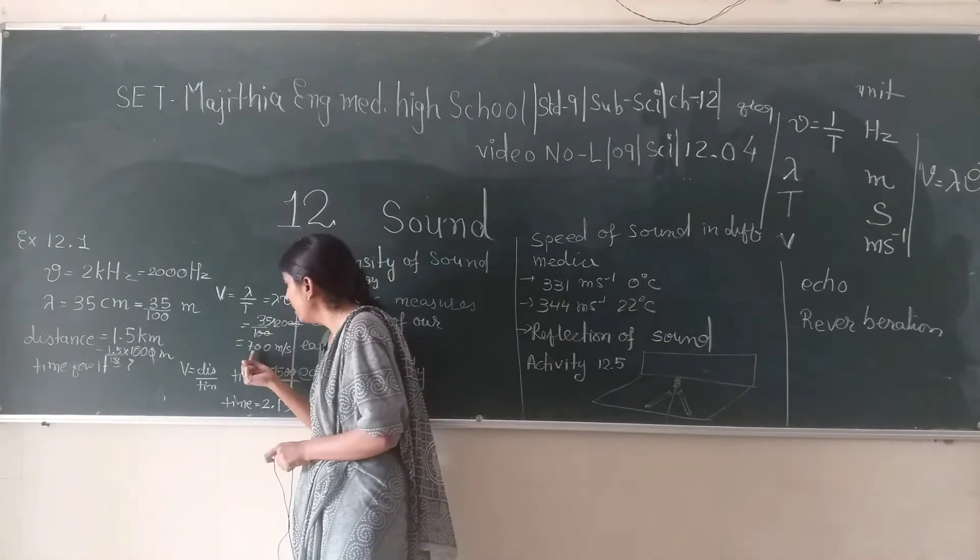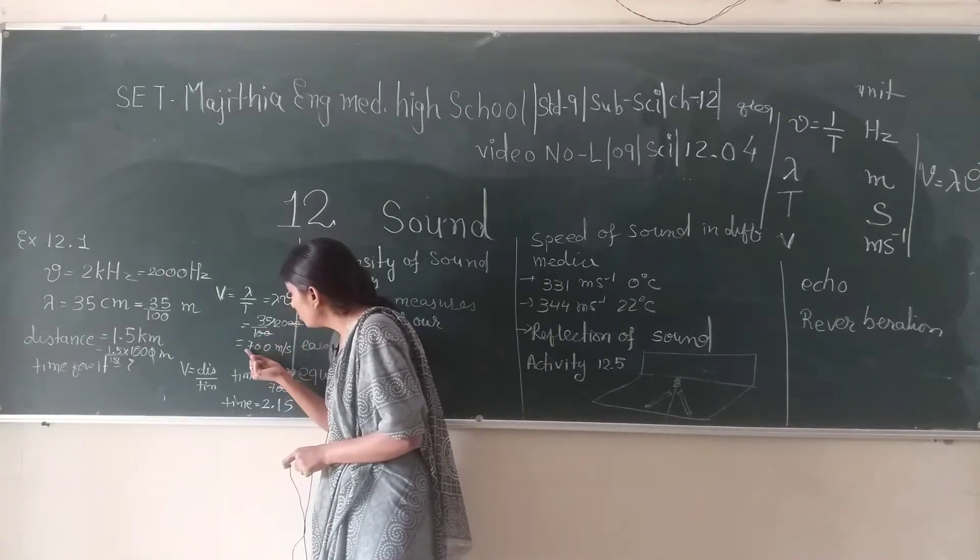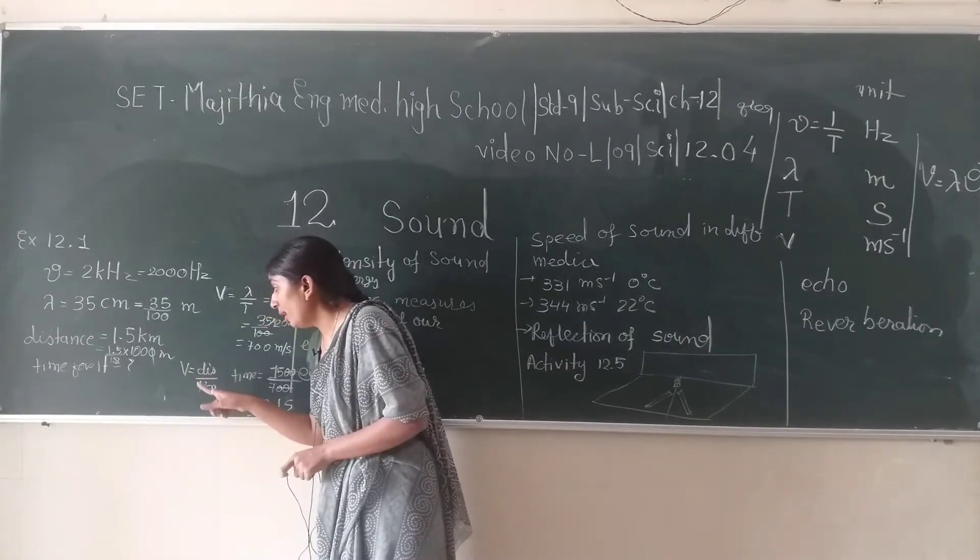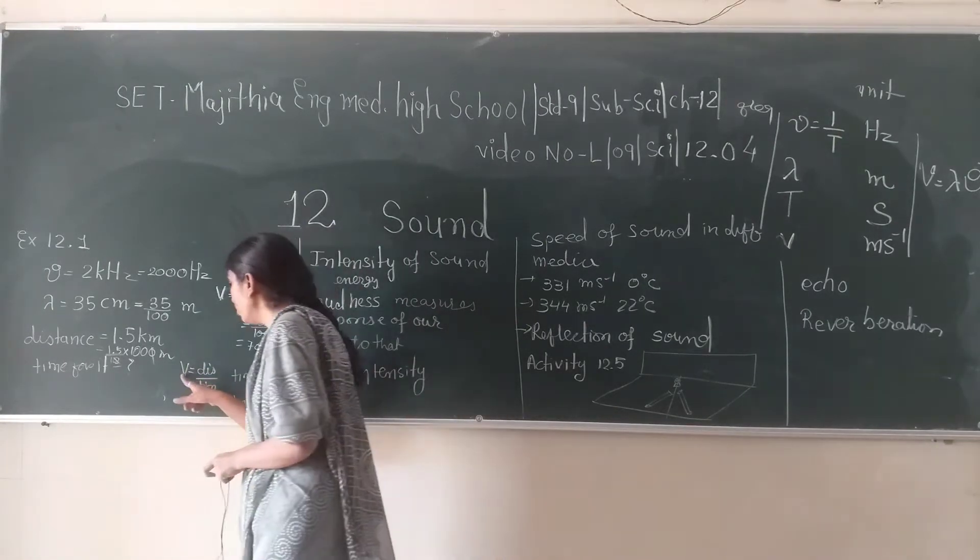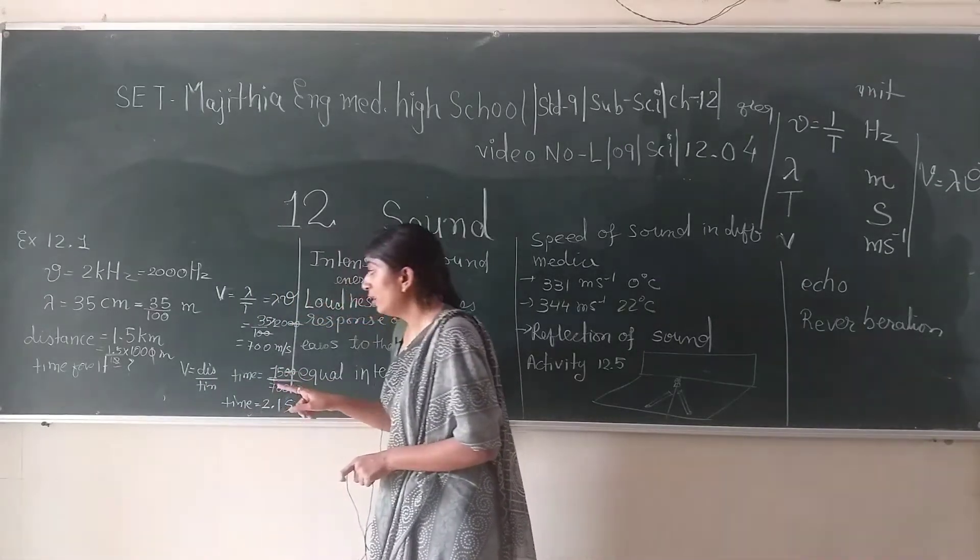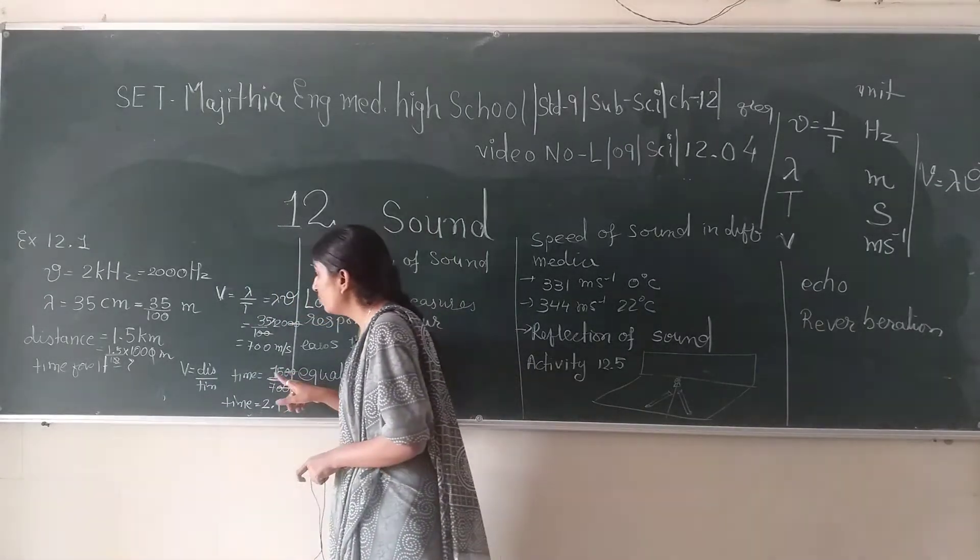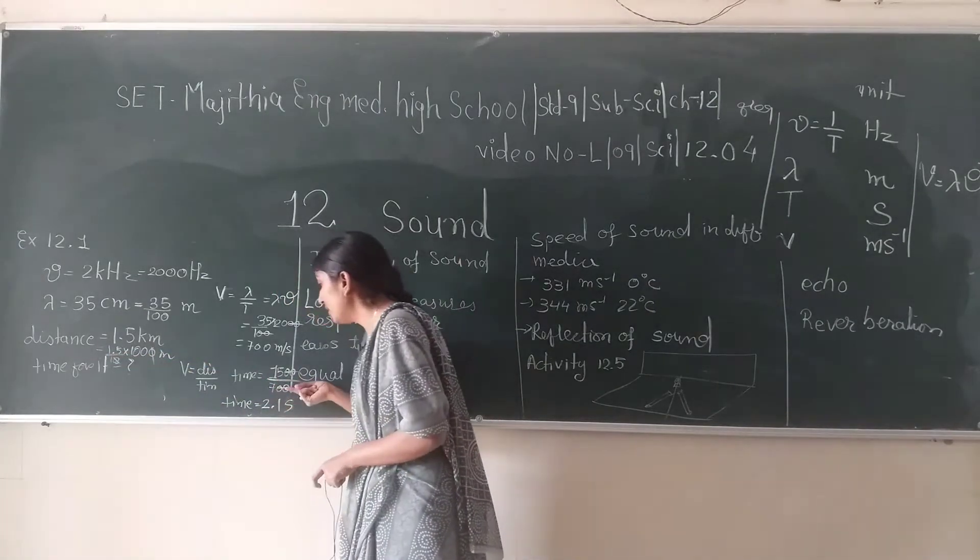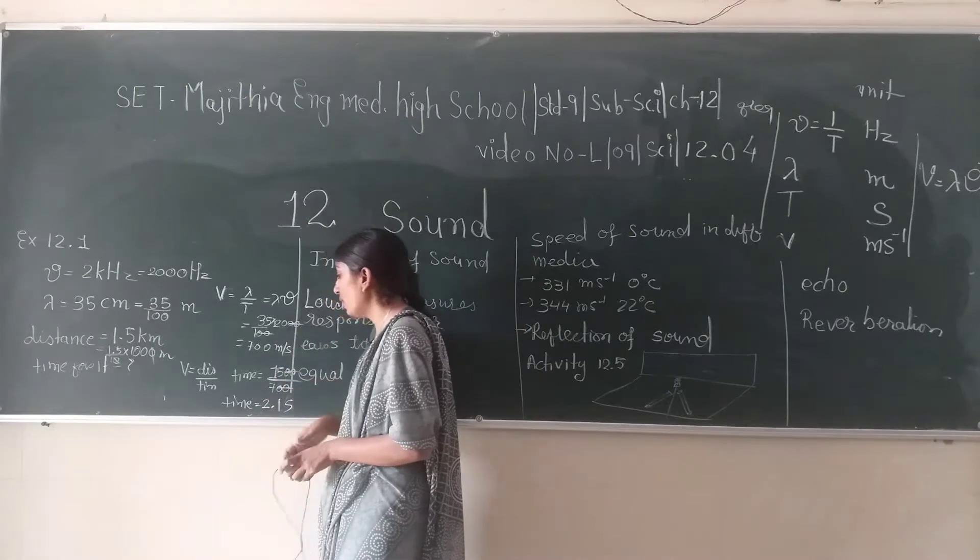Velocity is equal to distance upon time. That means if we want to calculate time, then time is equal to distance upon velocity. So distance is 1500 divide by 700, so the zeros are going to cancel each other.